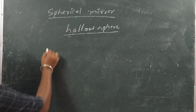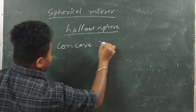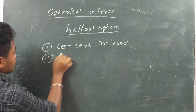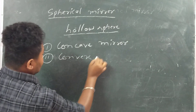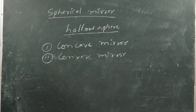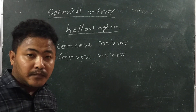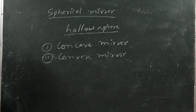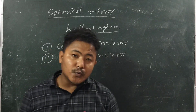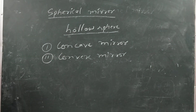Spherical mirrors are further classified as: number one — concave mirror, and number two — convex mirror. Spherical mirrors are those mirrors which are part of a hollow sphere.